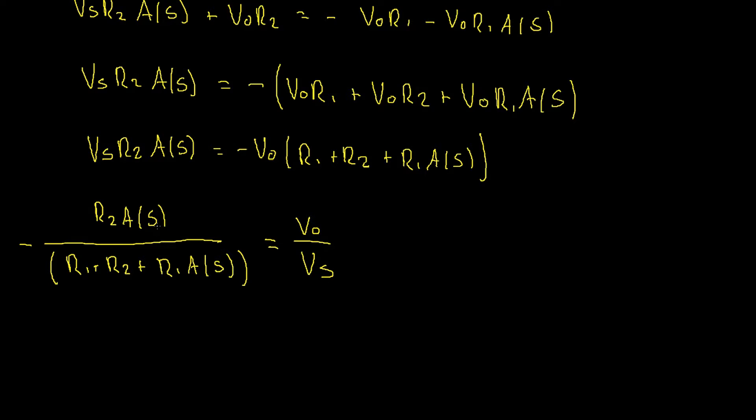Now as the vo term is common amongst all of the terms we can bring it out the front as well, which gives us the left side is unchanged, vs r2 A(s), which equals negative vo and then inside the brackets r1 plus r2 plus r1 A(s). Okay so everything's looking good so far. Let's rearrange to get this in terms of vo divided by vs. We can do that by simply dividing through by negative r1 plus r2 plus r1 A(s).